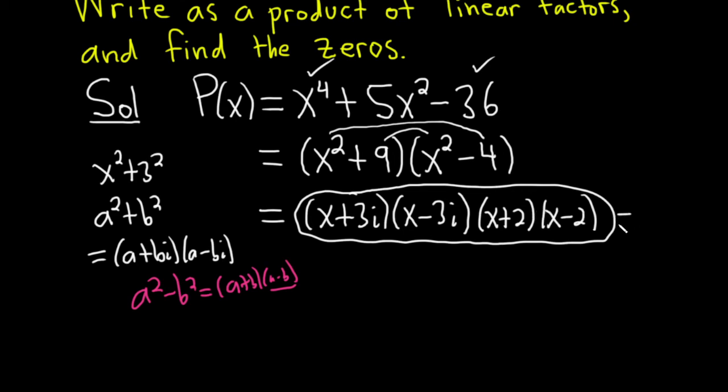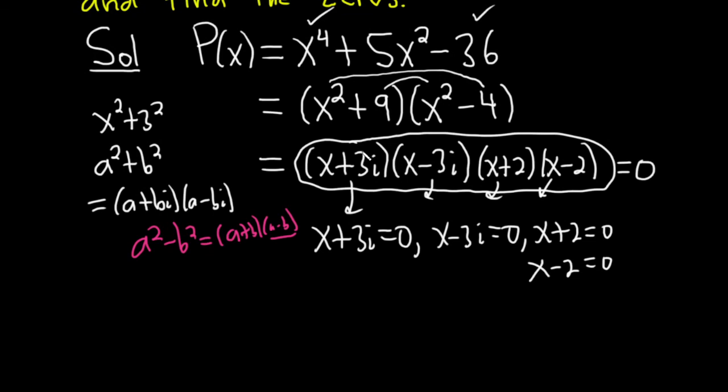So basically we're setting this equal to zero. And what that basically means is you set each linear factor equal to zero. So basically you get x plus 3i equals zero, x minus 3i equals zero, x plus 2 equals zero, x minus 2 equals zero. So you set each of these pieces equal to zero, each one, and you just solve each one.